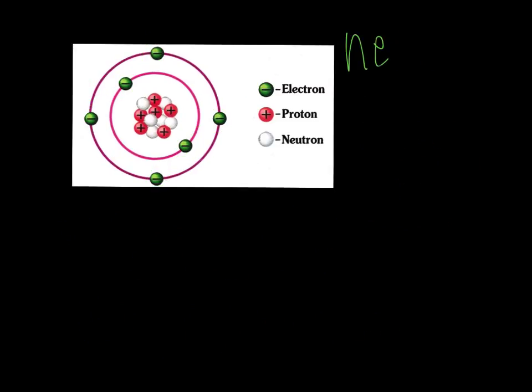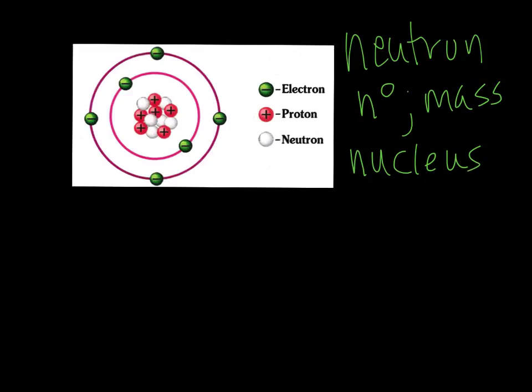Last particle is the neutron. And it has an overall neutral charge, but it does have a mass. And when we look at this, they're going to be in the nucleus. And in this case, you can see one, two, three, four, five, six. So this one has six neutrons.